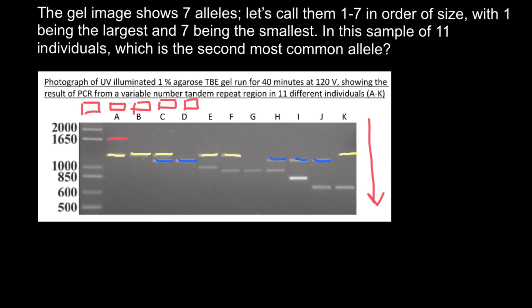This is one allele by size. This is the second type of allele, third type, fourth, fifth, sixth, and seventh. Let's call them one through seven in order of size, with one being the largest and seven being the smallest. So basically we have to choose between these two variants of alleles. Let's count them.